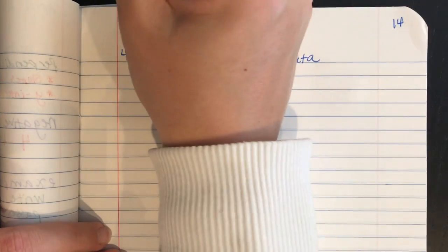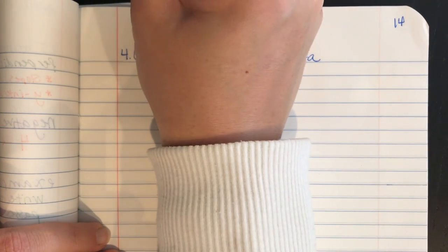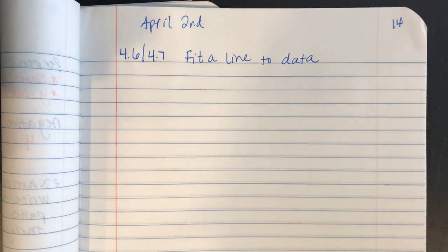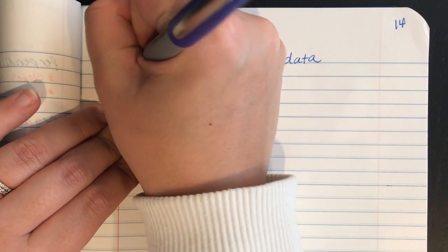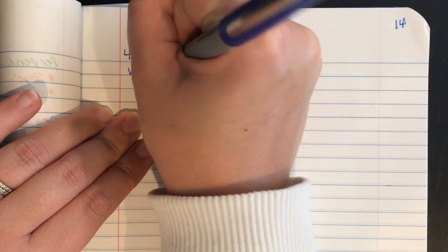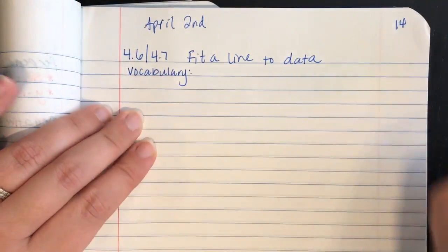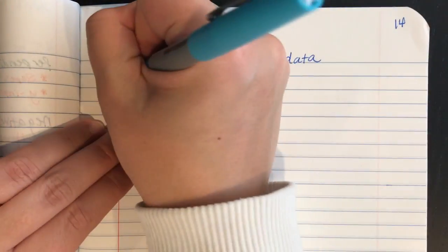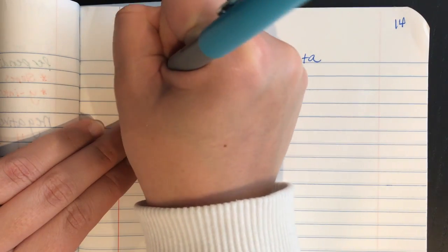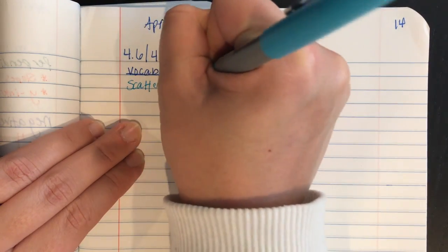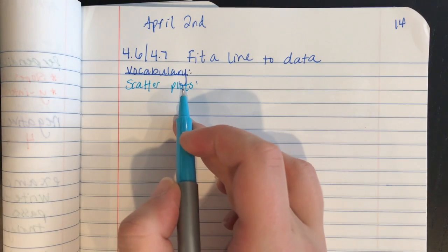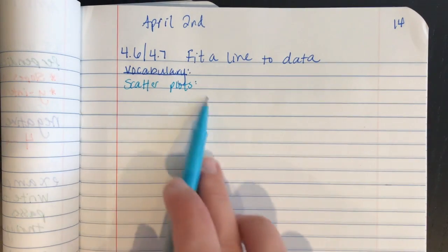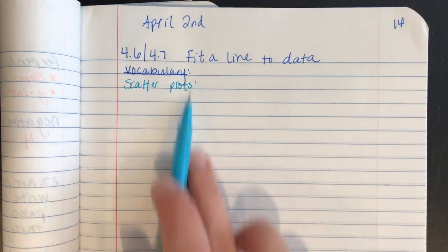And then today's date is April second. Okay, so let's start out by defining some vocabulary words. The first one is what we're going to be using, which are scatter plots. You've probably already seen these, you use them a lot in science, especially since data often does not fit a straight line in science.